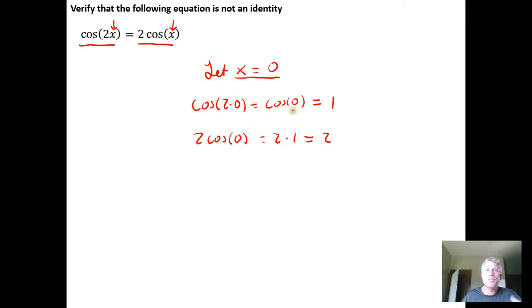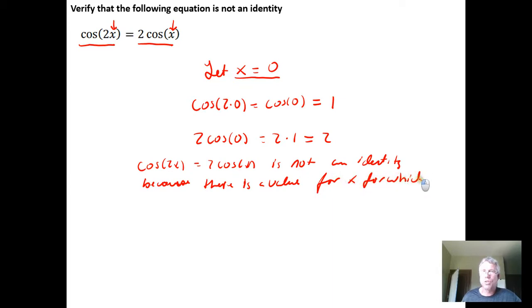And now we can make the conclusion that we don't have an identity because there is a value for x for which the two sides are not the same. So we would make that conclusion. We would say cosine two x equals two cosine x is not an identity because there is a value for x for which the cosine of two x does not equal two times the cosine of x.